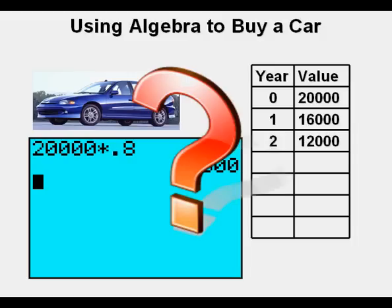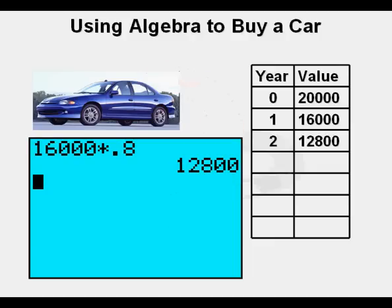Now for year two, do we need to take off another $4,000 for the price to be $12,000? No, that would be straight line depreciation. What we will have to do for the second year is take .8 for the 20% depreciation and multiply it by $16,000 for a second year value of $12,800.